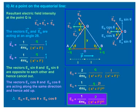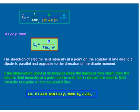We know that the multiplication of Q into 2L is the dipole moment P. So, the magnitude of the electric field at point Q will be P upon 4 pi epsilon 0 times (X squared plus L squared) raised to the power 3 by 2. The dipole moment direction is from negative to positive charge, but the electric field here is in the direction opposite to that of the dipole moment.